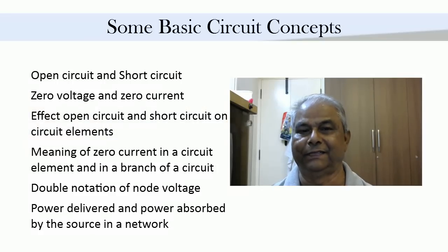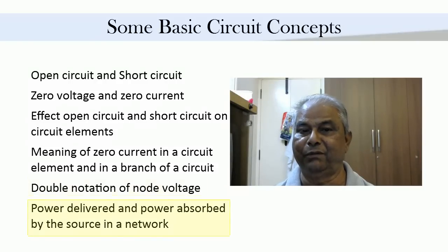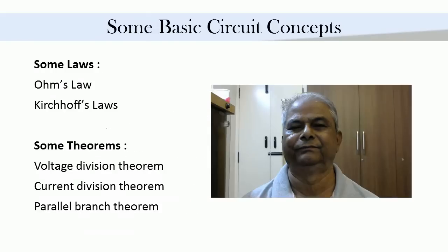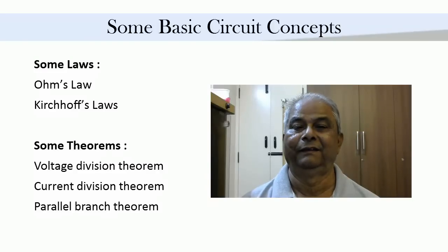Another important basic concept is the meaning of zero current through a circuit element or zero current through the branch of a network, double notation of node voltage, power delivered and power absorbed by the sources. While solving any network we use some laws and theorems, for example Ohm's law, Kirchhoff's voltage law, and Kirchhoff's current law.